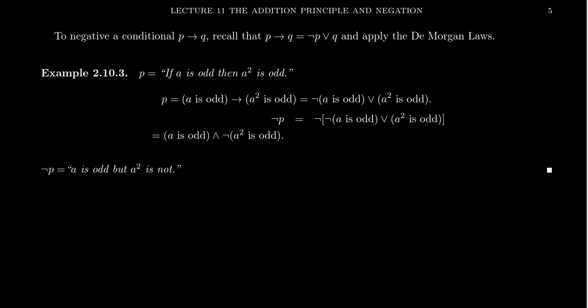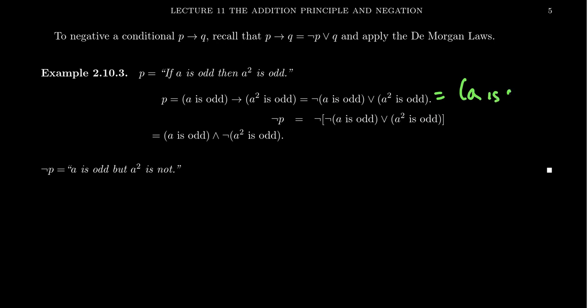Consider the statement P: 'if A is odd, then A² is odd.' This is a conditional — the premise is 'A is odd' and the conclusion is 'A² is odd.' We can rewrite this conditional as a disjunction: 'not(A is odd) or A² is odd,' which is 'A is even or A² is odd.' That would be the equivalent disjunctive form.